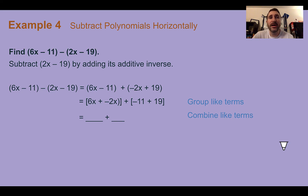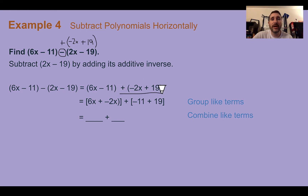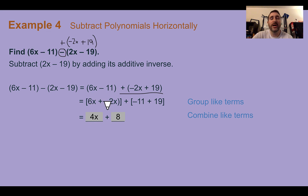Example 4, subtract polynomials horizontally. Find 6x minus 11 minus the quantity 2x minus 19. We see the minus sign, so we do the additive inverse: change to addition and take the opposite — so minus 2x becomes negative 2x, and minus 19 becomes plus 19. Now group and combine like terms: 6x plus negative 2x is 4x, and negative 11 plus 19 is 8. So the answer is 4x plus 8.